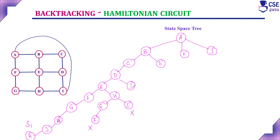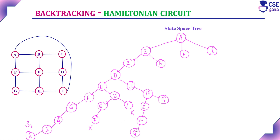Backtrack to the previous step and consider the possibility through I. From I, D is already visited, so the unvisited vertex is H. From H, the unvisited vertices are E and G. From E, D is already visited in this path, so the unvisited vertex is F. From F, the unvisited vertex is G. From G, F and H are already visited. All vertices have been visited exactly only once, but from G you cannot return back to A. So this is a dead end.